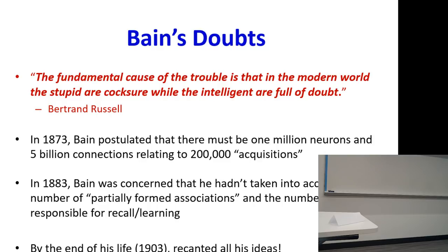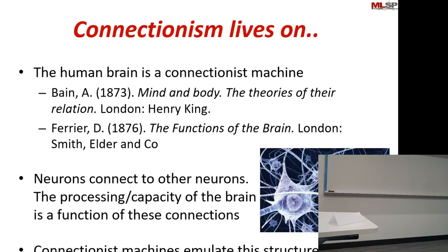Of course we know he was wrong in his arithmetic — not in his theory. Today we know the human brain is really amazingly large: it has over 80 billion neurons and over a trillion connections — ample capacity to perform pretty much everything. And the information indeed is in the connections.